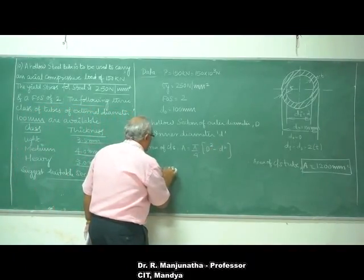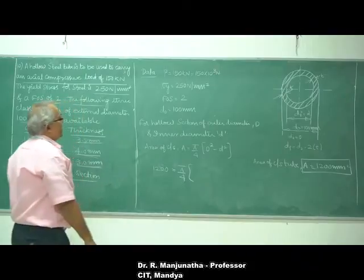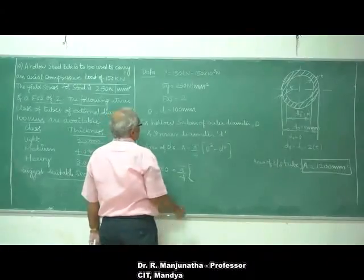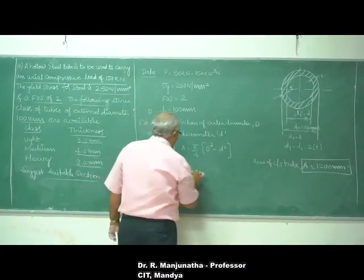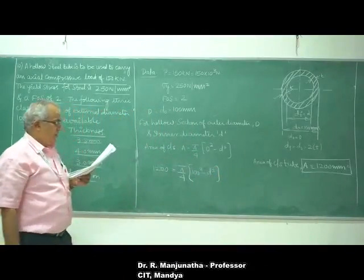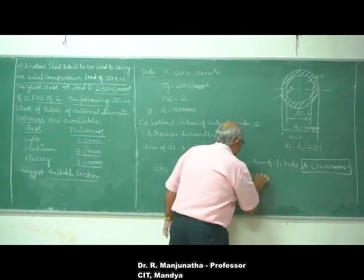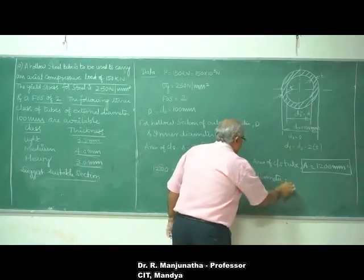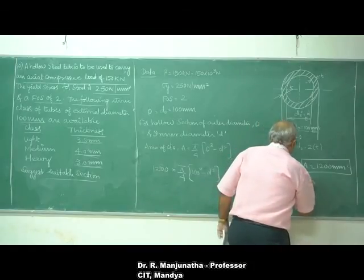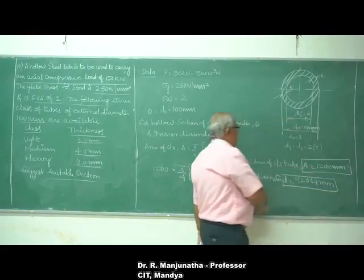We know the area of cross-section is 1200 mm², so: 1200 = π/4 × (100² − d²), where the outer diameter D₀ = 100 mm. Solving this equation, the inner diameter d equals 92.044 mm.